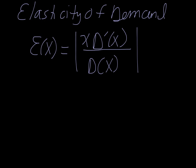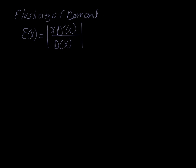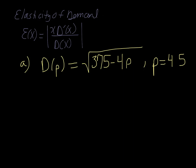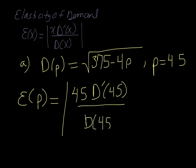So let's look at an example. We have D(p) equal to the square root of 375 minus 4p. We want to find elasticity of demand at a price of $45. Alright, so using the formula above, E(p) is the absolute value of the price, which is 45, times the derivative of price, D prime of 45, all over D(45). So you can see that in order to use this formula, we have some work to do.